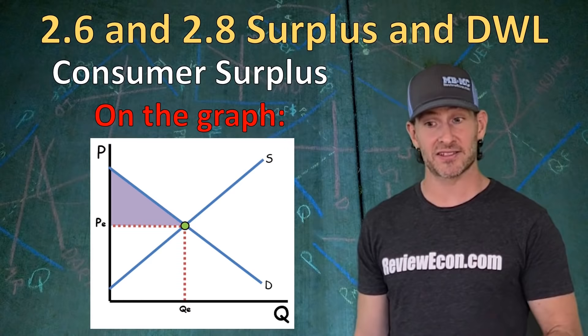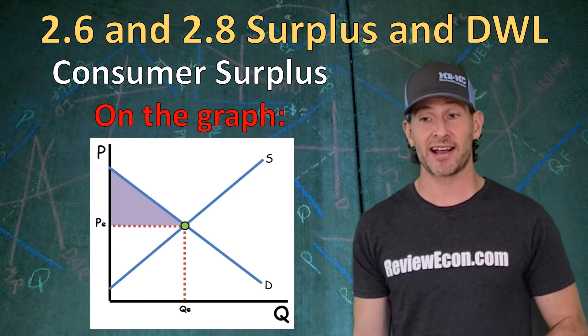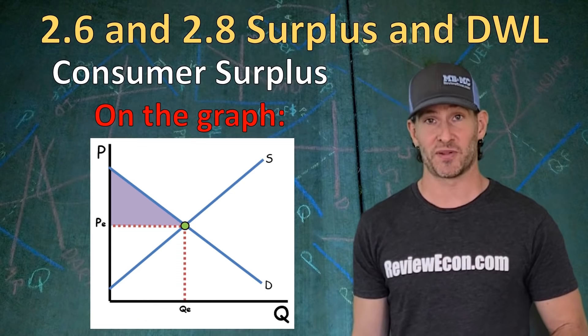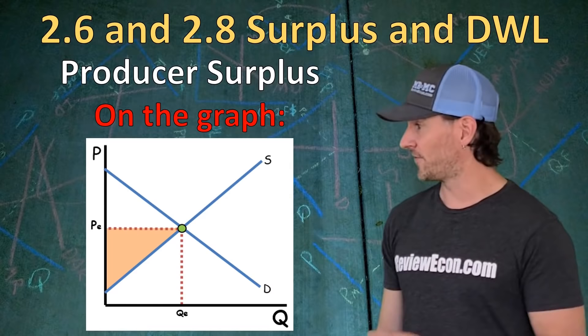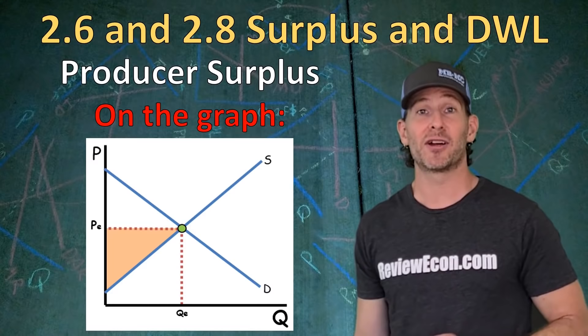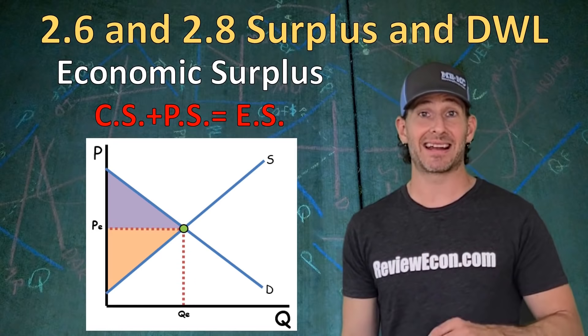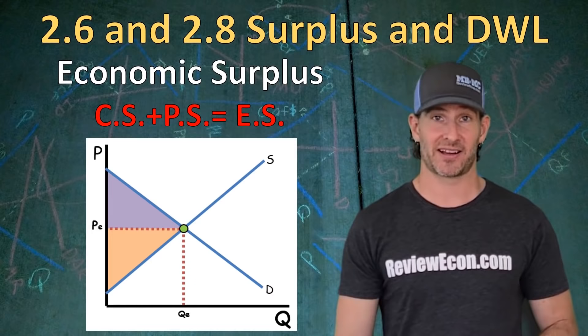On the graph, for consumer surplus you find the equilibrium price, go out to the quantity demanded, and up to the demand curve — that triangle area is consumer surplus. For producer surplus, you find the equilibrium price, go to the equilibrium quantity, and drop down to the supply curve — that area is producer surplus. Economic surplus is consumer surplus and producer surplus added together. A little side note: tax revenue could also be part of economic surplus.